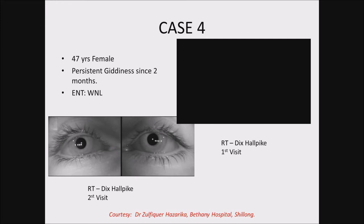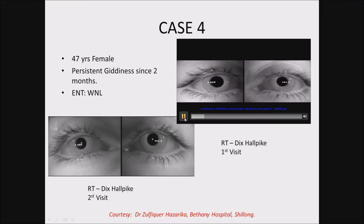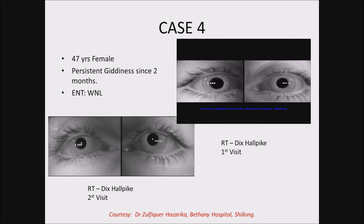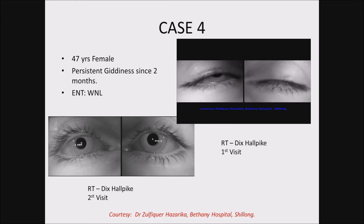Another case: a 47-year-old female who came with persistent giddiness for two months. Again, nothing was elicited clinically on examination. This is quite an interesting case — on Dix-Hallpike on the right side, notice the latency period: you get a torsional nystagmus. Then, after a few seconds, the torsional component reduces and the patient goes on to develop a purely downbeating nystagmus.